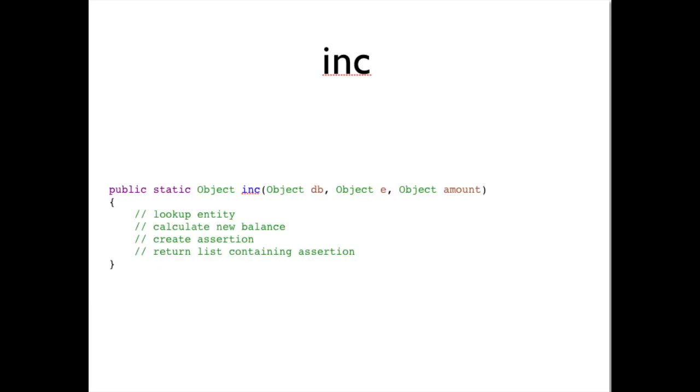Now let's look at the implementation of inc. Inc's job is simple, as shown in the pseudocode here. Look up an entity, create the entity's new balance based on the old balance, create an assertion containing that new balance, and then return a list containing the assertion.